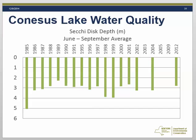This slide shows the Secchi disk measurements. These measurements are made by lowering the Secchi disk into the water column until it disappears. Typically, these are shown with zero representing the water surface, and the bars depicting how deep into the lake the disk is still visible. A large value means clearer water. It appears that the Secchi disk depth has been steady since the late 1980s.